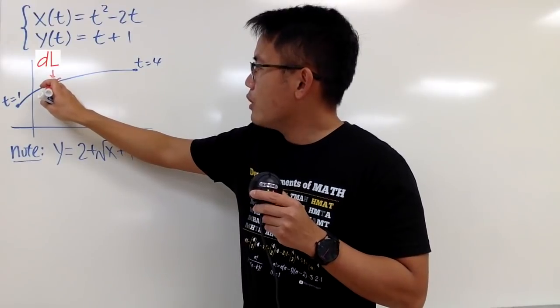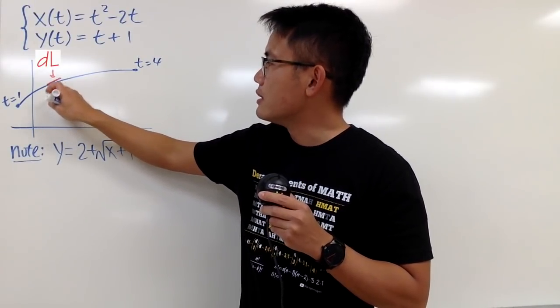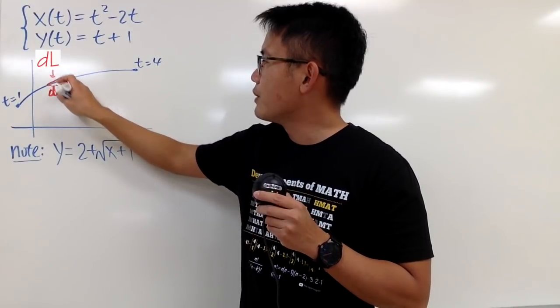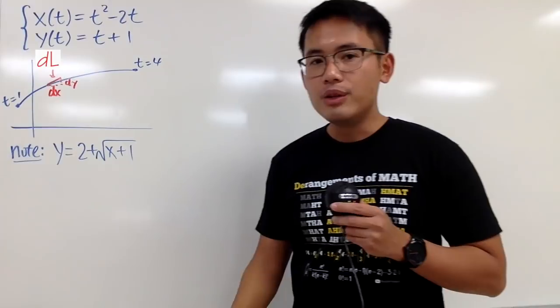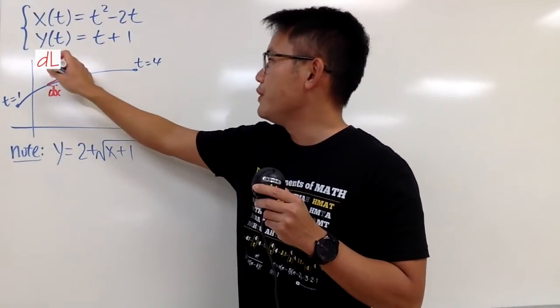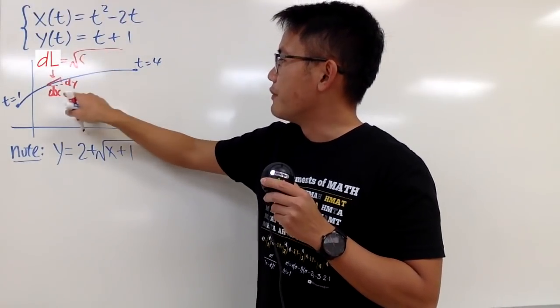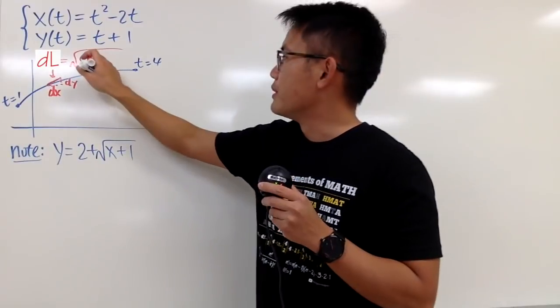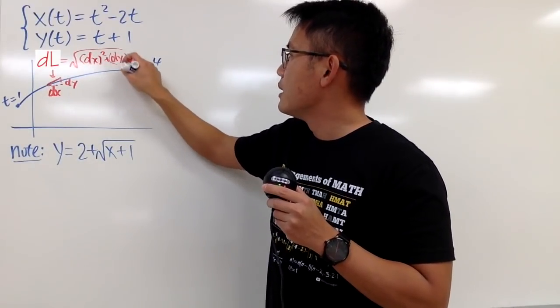If you go horizontally, this is a small change in the x values, so this is dx. And if you go up vertically, this is dy. So by doing that, you can form a little right triangle, and dL is pretty much the hypotenuse. This is just going to be the square root of dx squared plus dy squared.